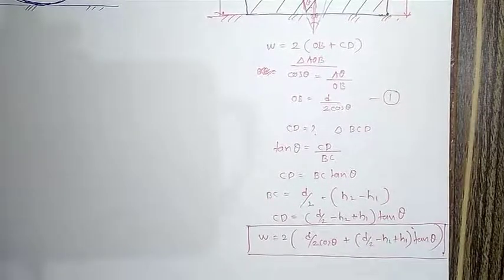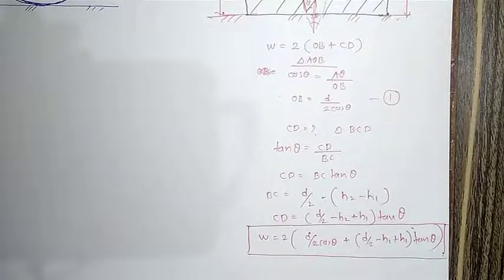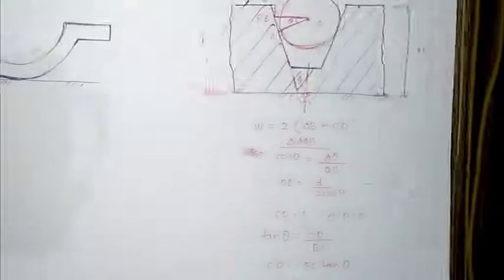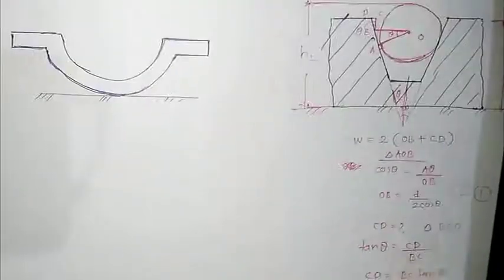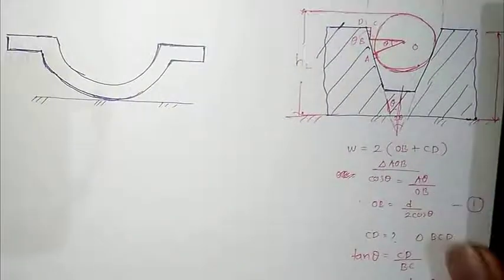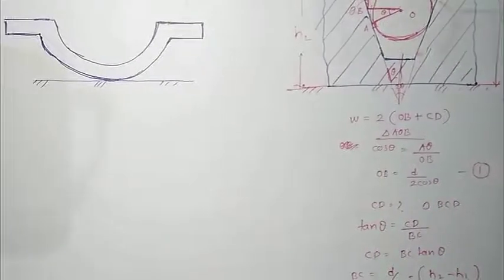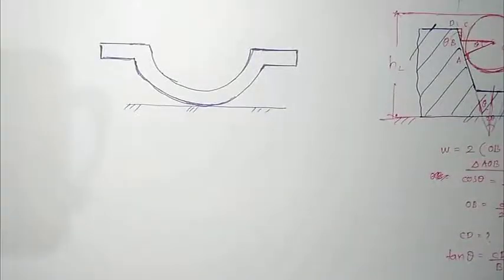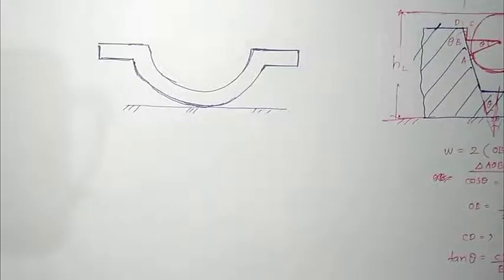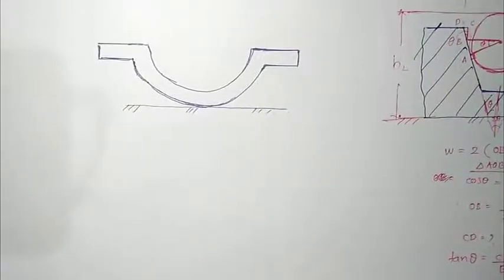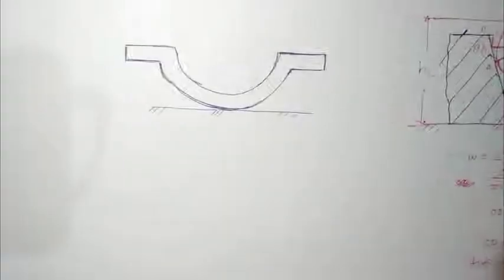This simple equation gives you the width of the component, which can be measured using simple instruments like one sphere and a height gauge. Now we will derive the equation for calculating the convex radius of a component using simple instruments like a sphere and a micrometer, or a roller and a micrometer. This is the component that we have and we want to find this radius.